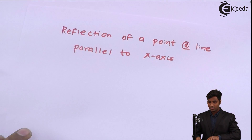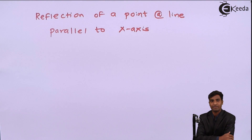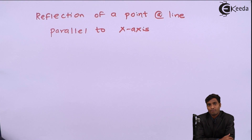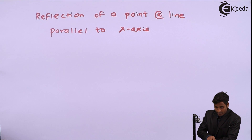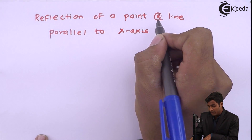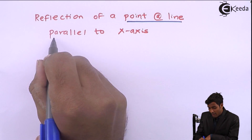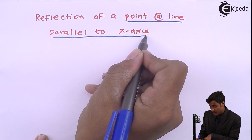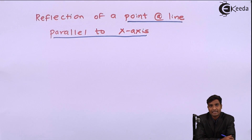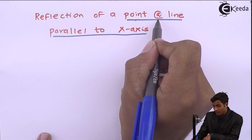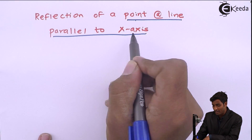Hello friends. We have the matrices for reflection or mirror about x-axis and y-axis. We don't have any matrices for reflection of a point about a line parallel to x-axis. Now we will derive the matrices for a point about a line parallel to x-axis.